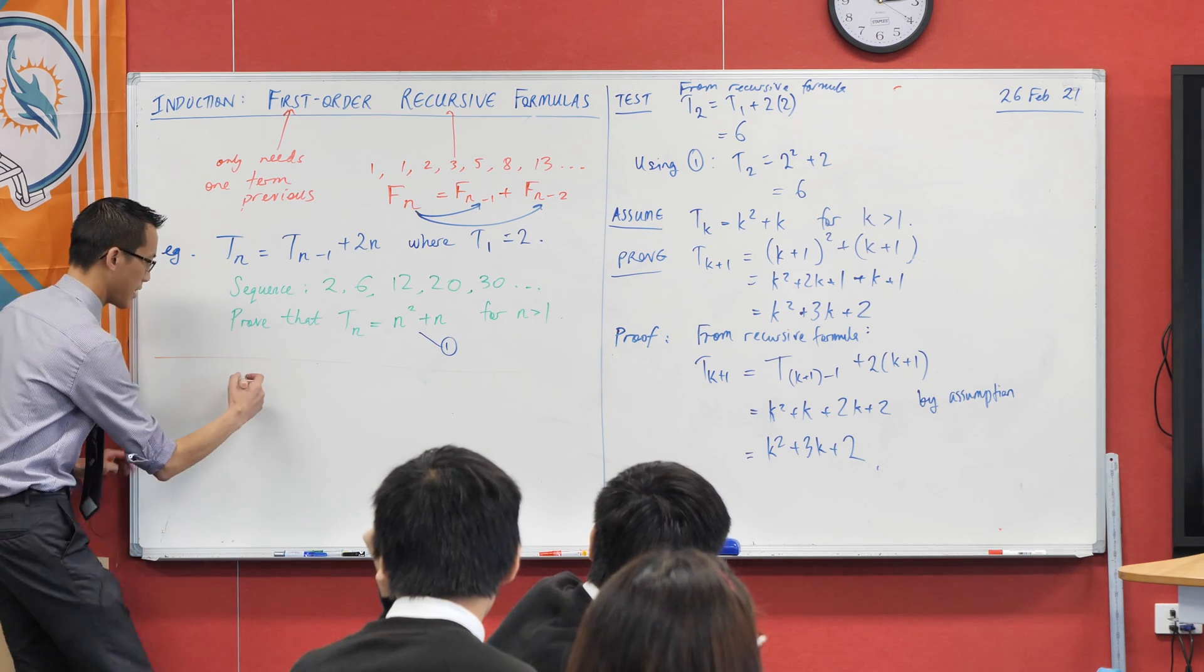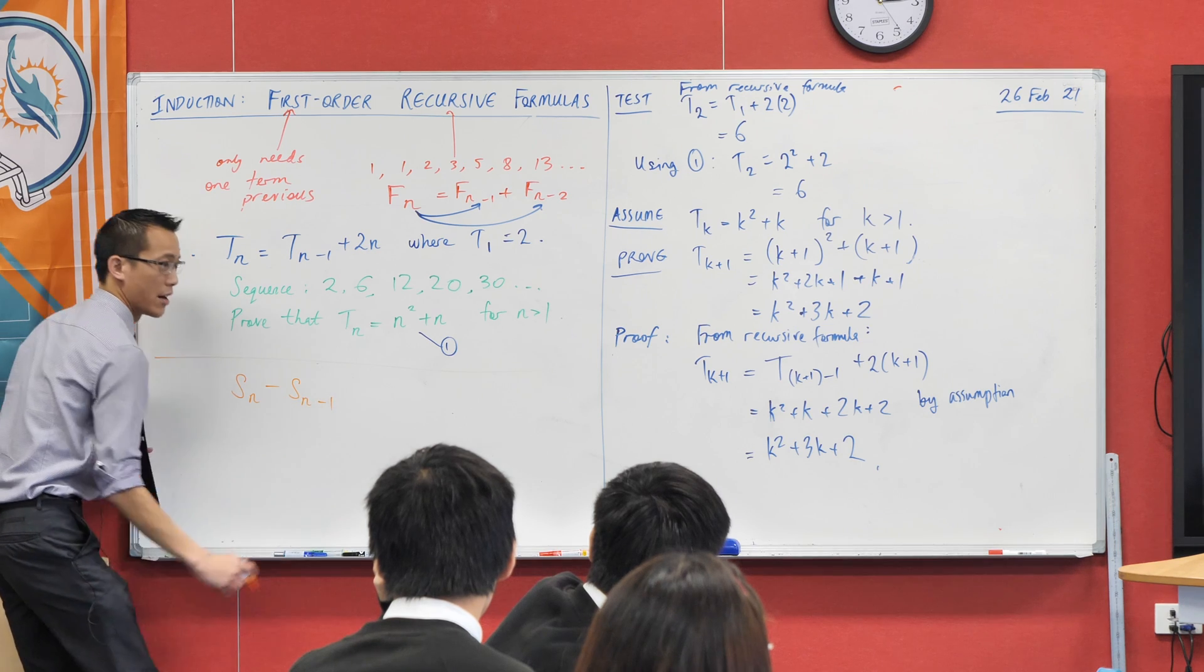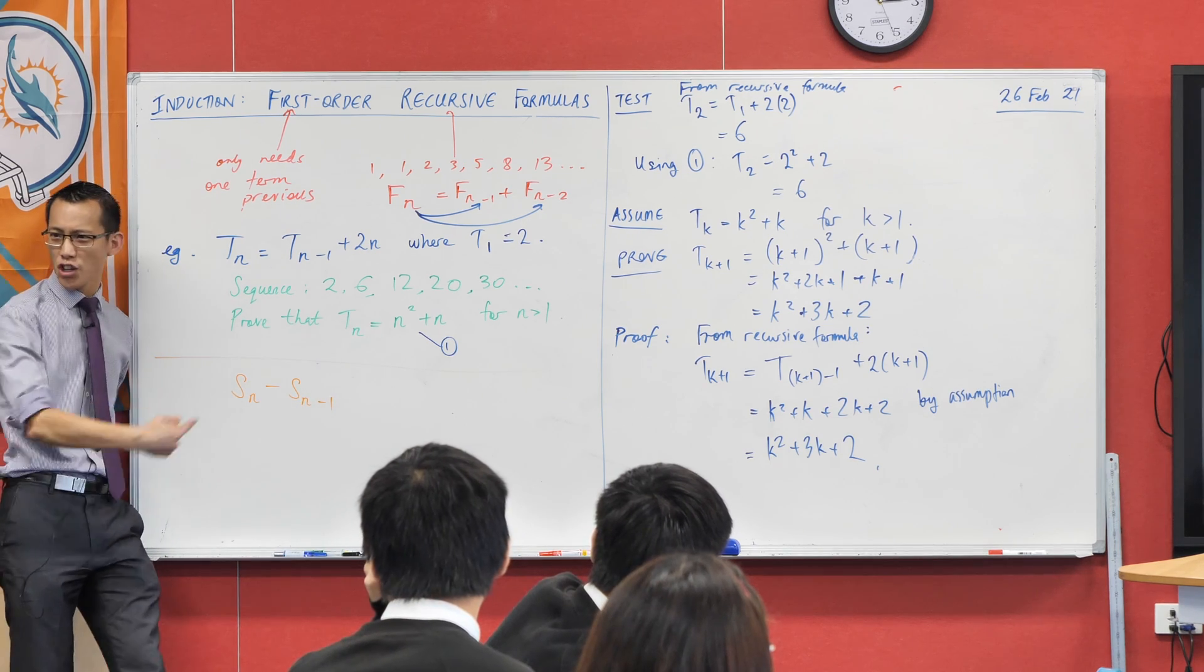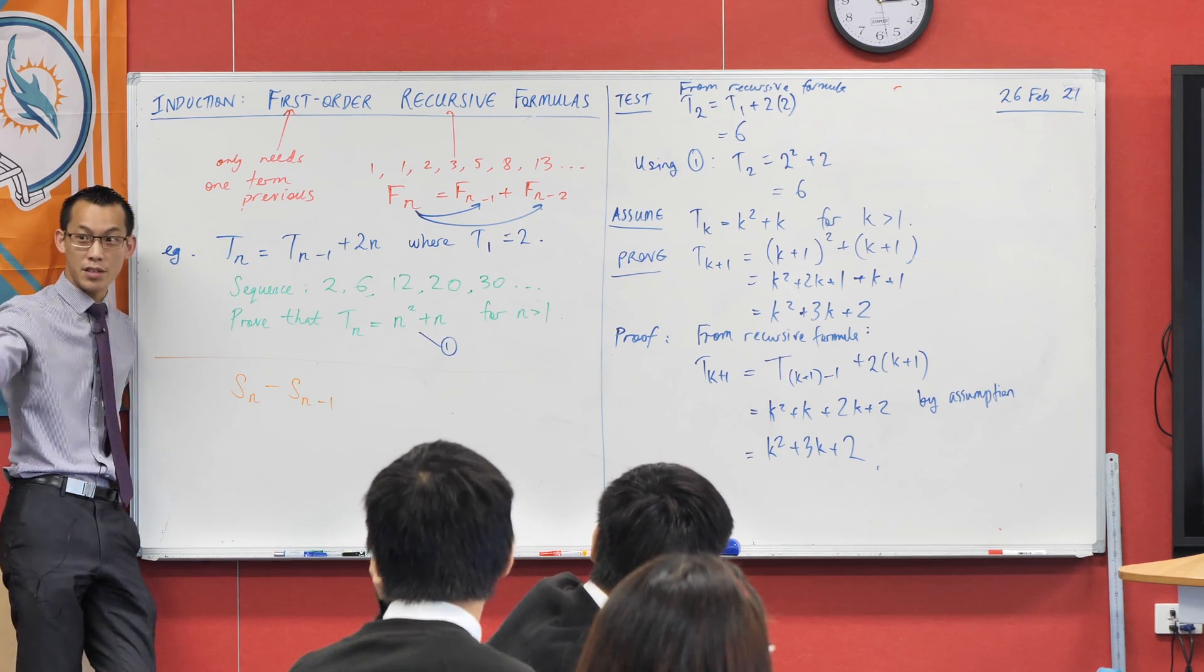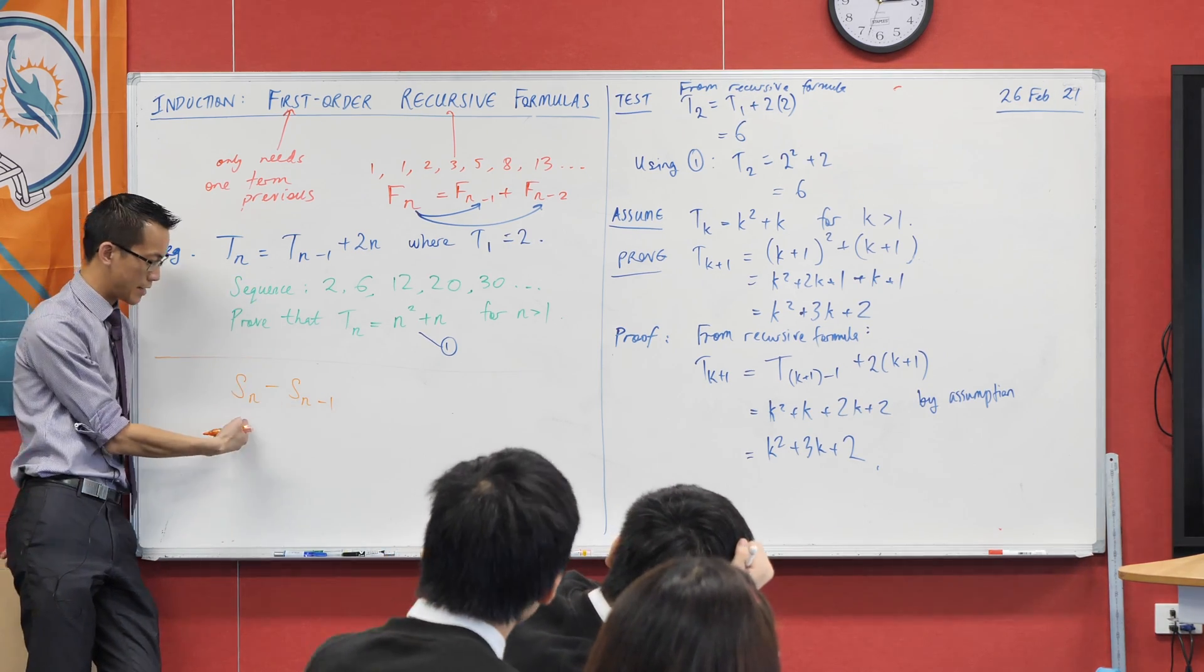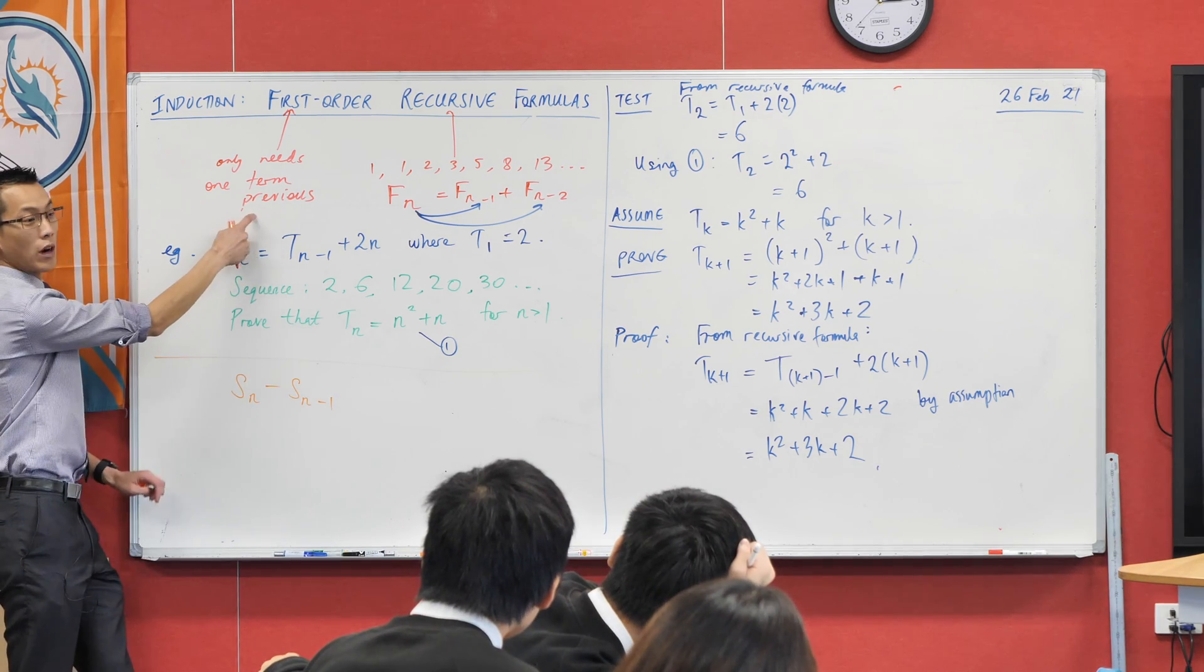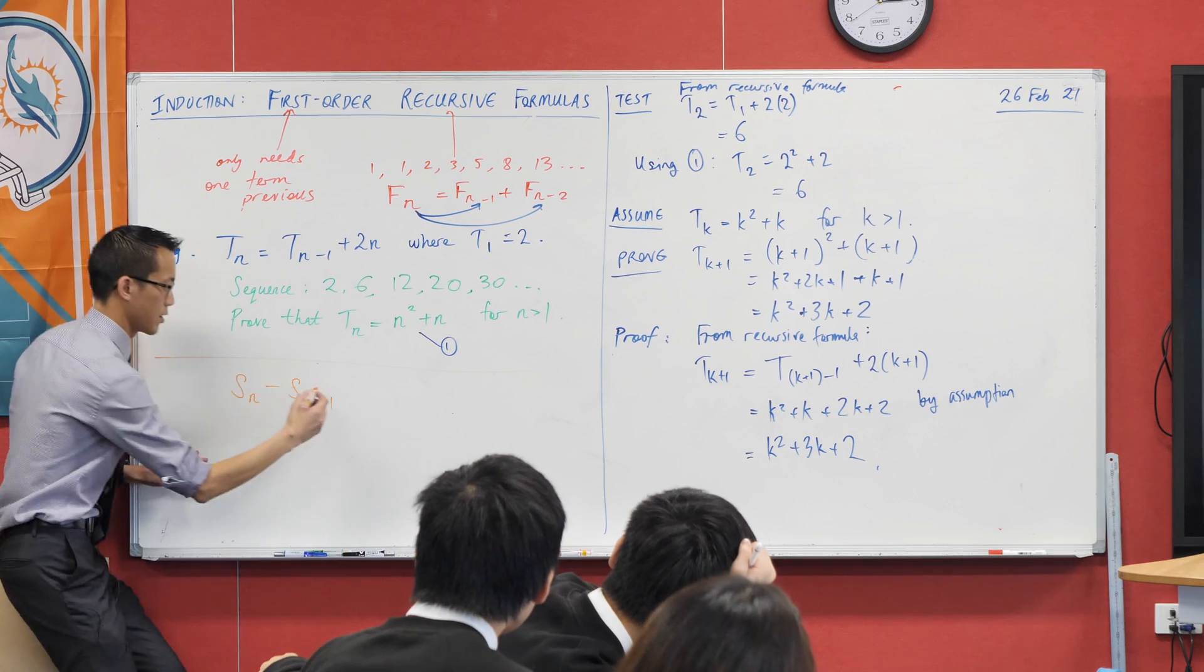For example, does this ring any bells? What is this? Which topic is this from? This is from series and sequences, right? Because one of the ways you define how to get to the next term or get to the nth sum, the partial sum, is to look at the gap from one term previous or one sequence previous, right?